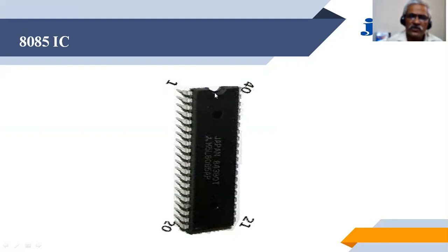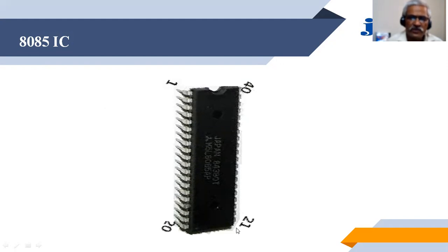Starting from pin number one on the left of the notch, go on counting pin number one, two, three, four, five, six, seven, up to twenty. So on the left of this IC there are twenty pins numbered from pin number one to pin number twenty. Then go to the right side — the right side going down is pin number twenty-one. Go on counting twenty-one, twenty-two, twenty-three, until the end pin number forty. Thus these are the forty pins, twenty on both sides of this DIP.